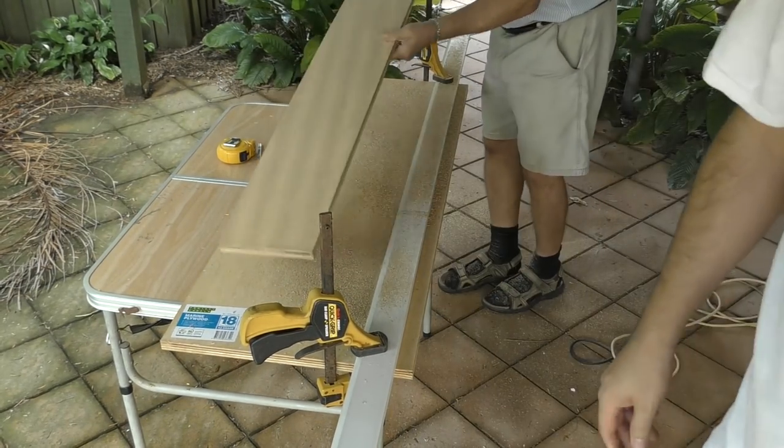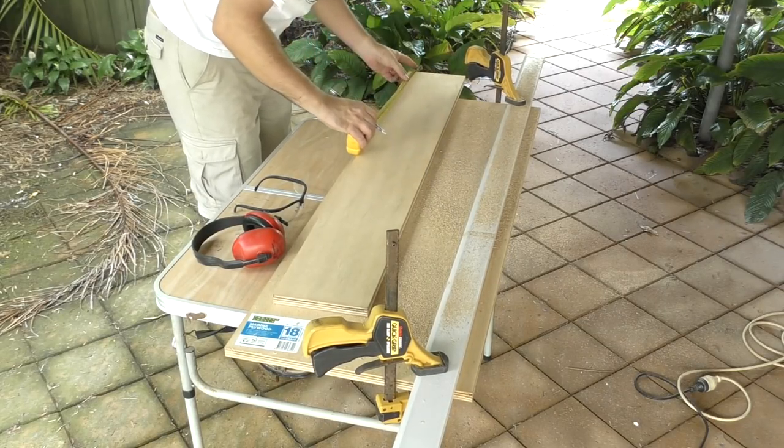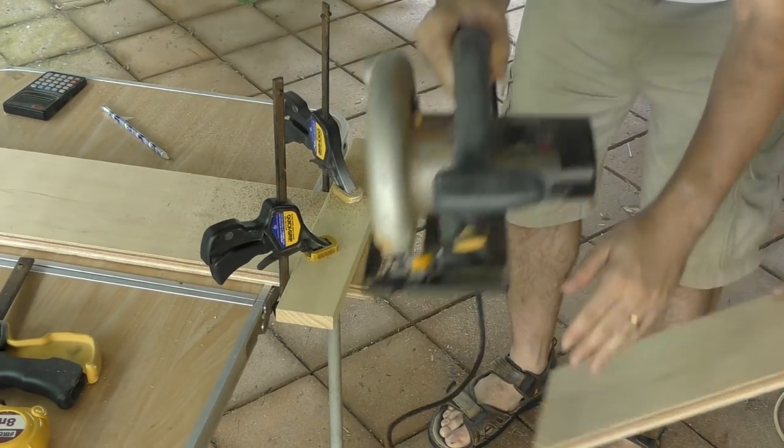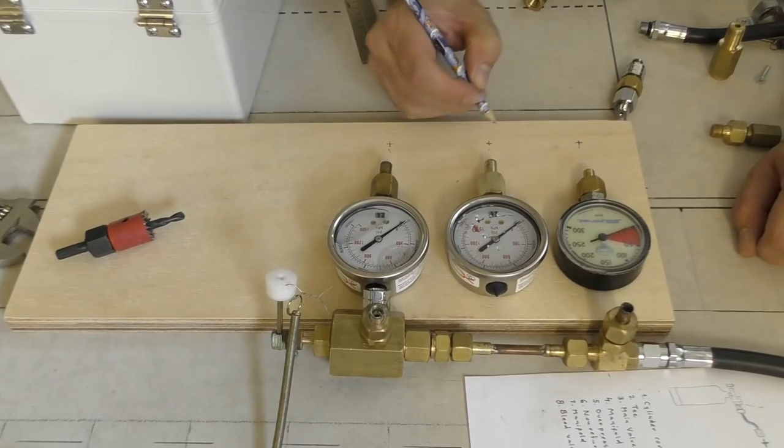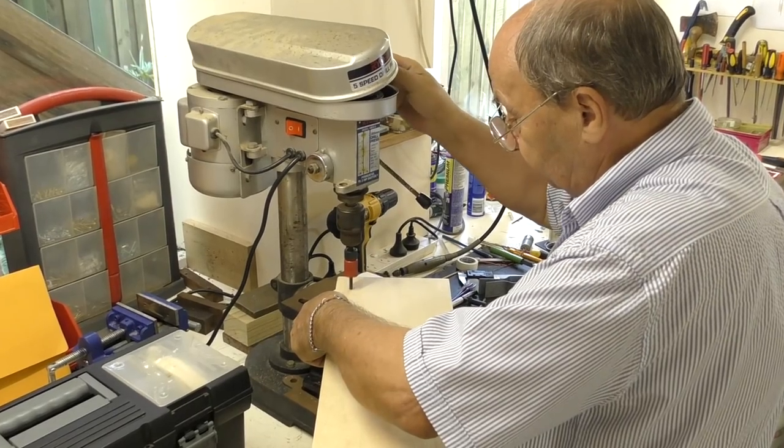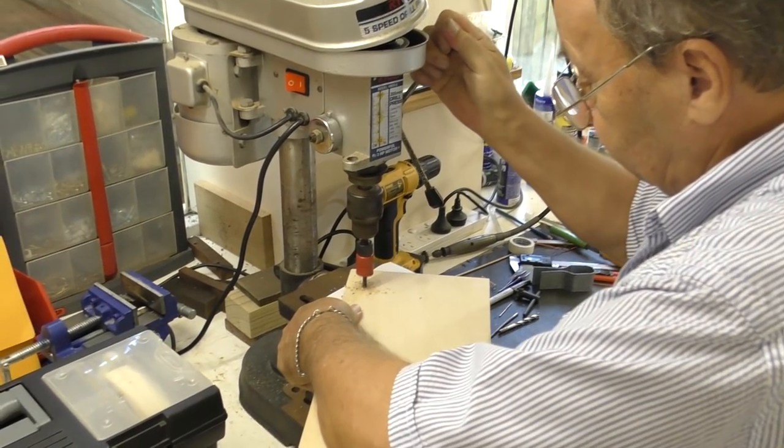Next we started construction of one of the sides of the box that was going to house everything. The box is made from 18mm marine ply as we expect this box to get soaked during launch. We then marked out the location where the gauges were going to go and drilled some holes for the pipes to go through into the box.